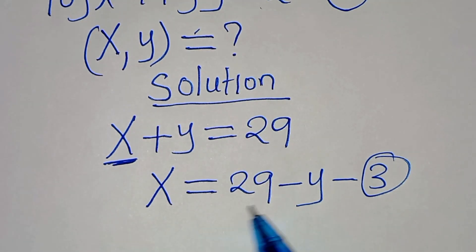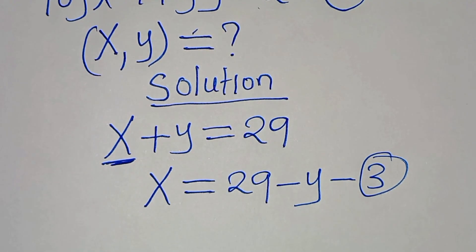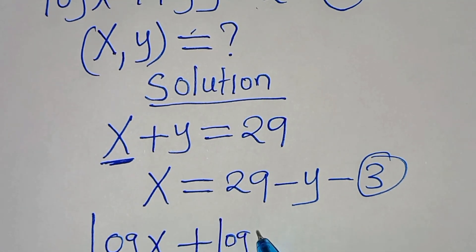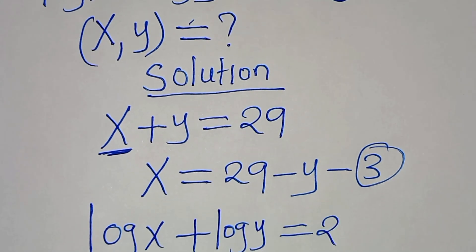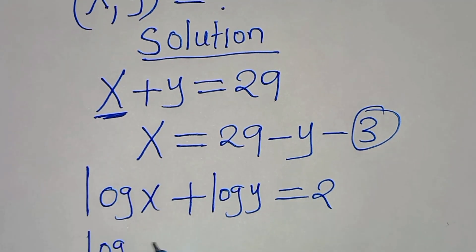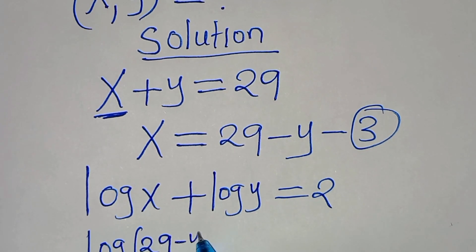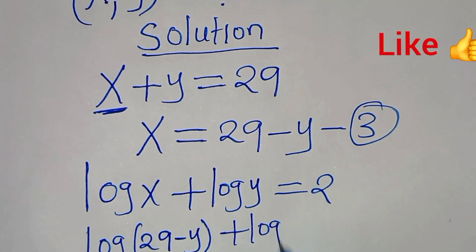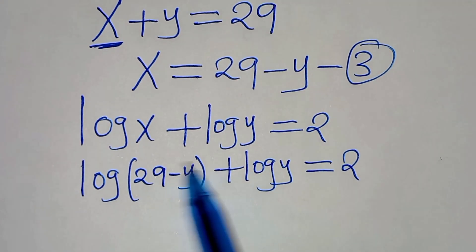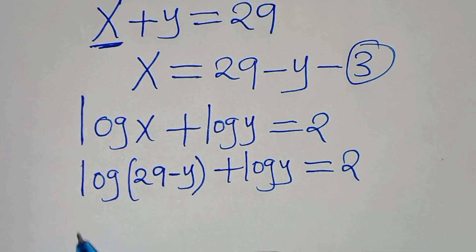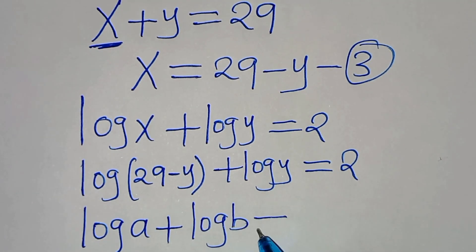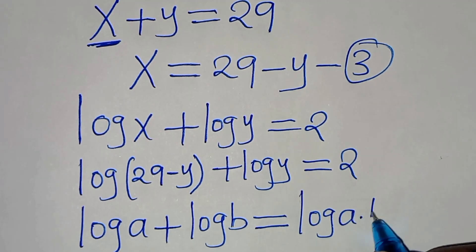Now let's substitute equation 3 into equation 2 where we have the value of x. Remember equation 2 is log x plus log y equals 2. Substituting x, which is 29 minus y, we have log(29 minus y) plus log y equals 2. Now log(29 minus y) plus log y is in the form log a plus log b, which we can express as log(a times b).